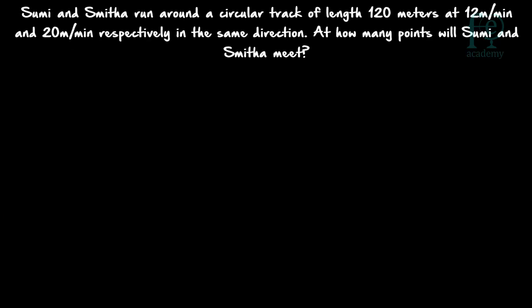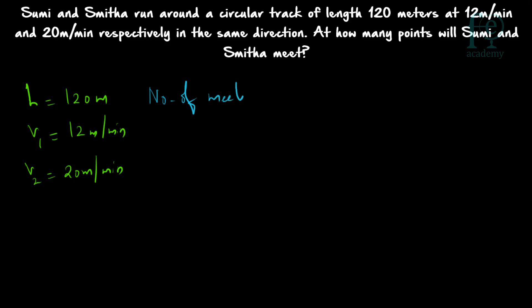Second question: Sumi and Smitha run around a circular track of length 120 meters at 12 meters per minute and 20 meters per minute respectively, in the same direction. At how many points will Sumi and Smitha meet? The length is 120 meters, V1 equals 12 meters per minute, and V2 equals 20 meters per minute. They are running in the same direction.